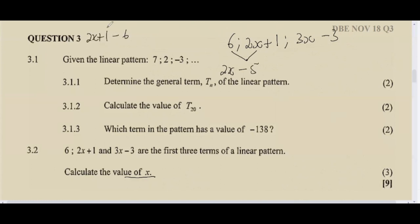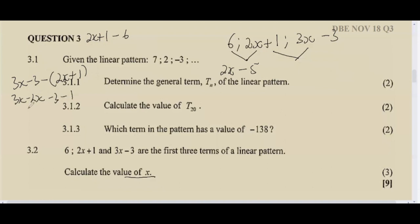Now t3 − t2: be careful — we are subtracting an expression, so put it inside brackets: (3x − 3) − (2x + 1). A common mistake is omitting the bracket, which means the minus only affects 2x but not the positive 1. With the bracket, the negative distributes properly. So 3x − 2x = x and negative 3 minus 1 = negative 4, giving x − 4.